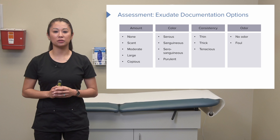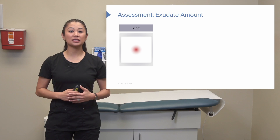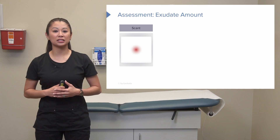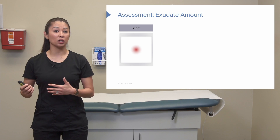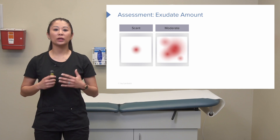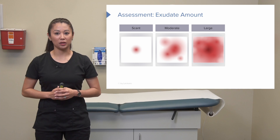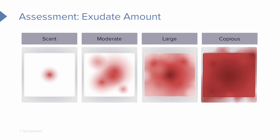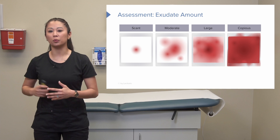Looking at exudate amount in more detail: scant means a tiny amount visible on the gauze pad — nothing to worry about but something to monitor. Moderate drainage is the next level. Large drainage is the next level up. Copious means the exudate is saturating through the bandage so much that we'll have to change it out frequently — for an incision wound, this would need to be reported to the physician.